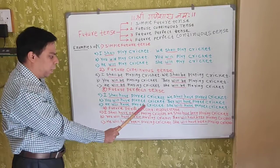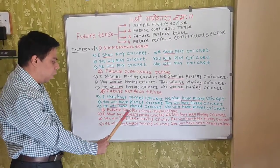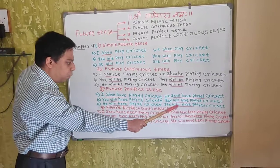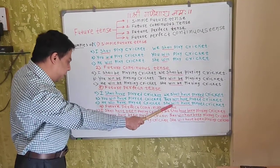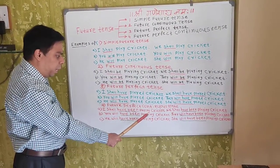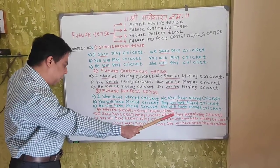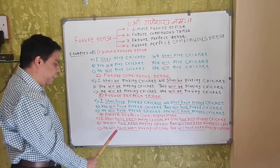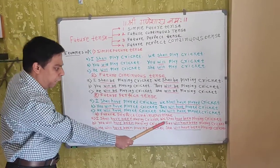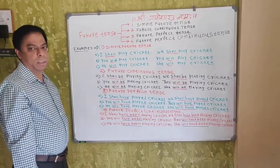Future perfect continuous tense. I shall have been playing cricket. We shall have been playing cricket. You will have been playing cricket. They will have been playing cricket. He will have been playing cricket. She will have been playing cricket.